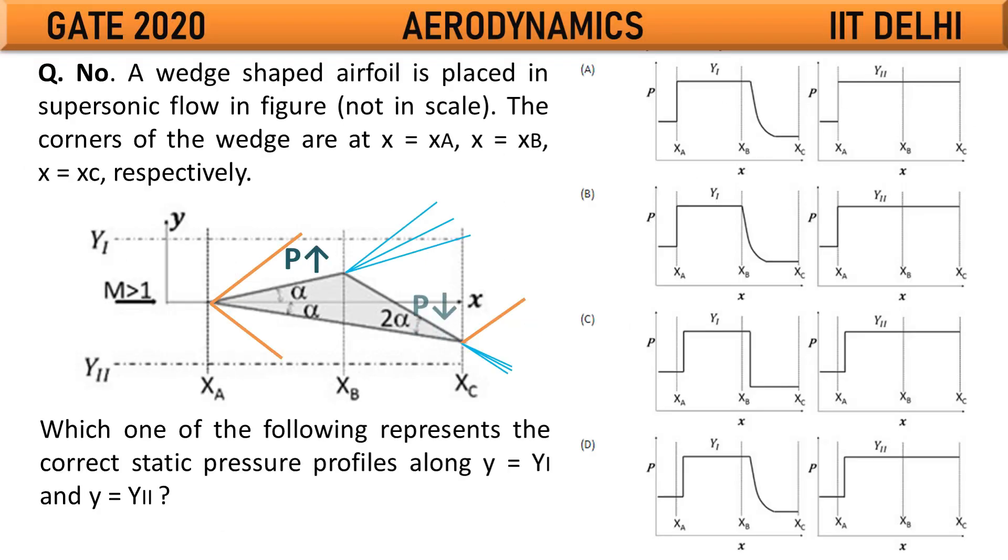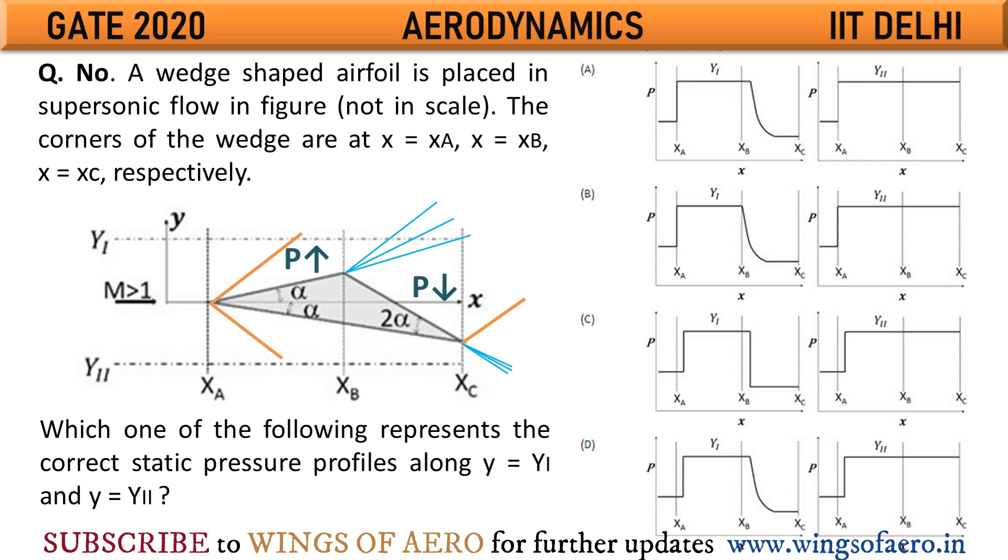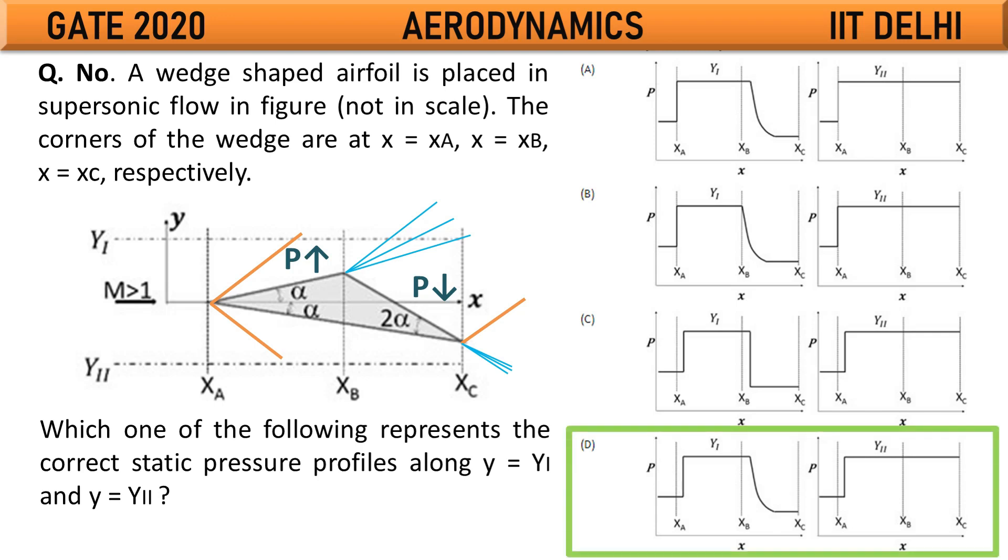You can see that D is the perfect answer because at point XA, the pressure is gradually increasing at the upper profile, and at the XB point, after some particular point, it is gradually decreasing the pressure. At the rear part, across the XA section, the pressure is gradually increasing in the down curvature and remains constant throughout XA, XB and XC. So the right option is option D.